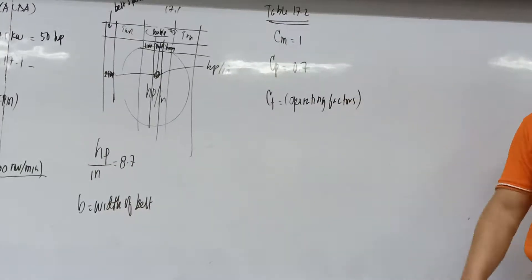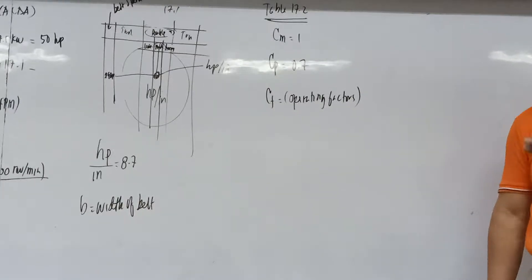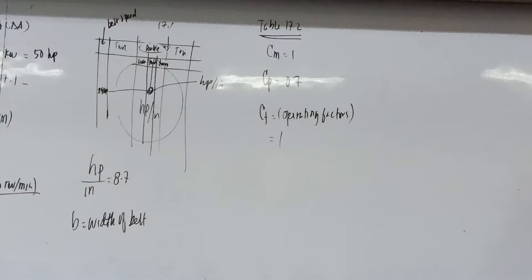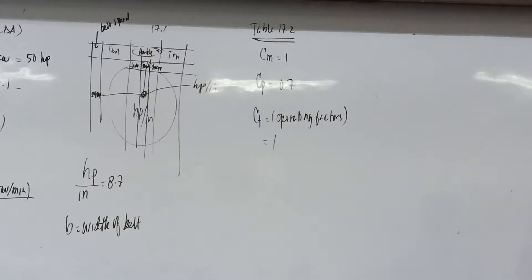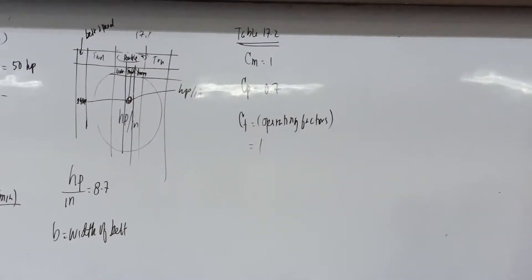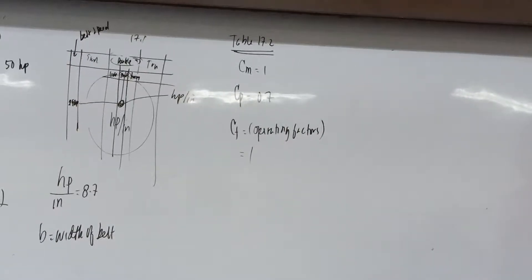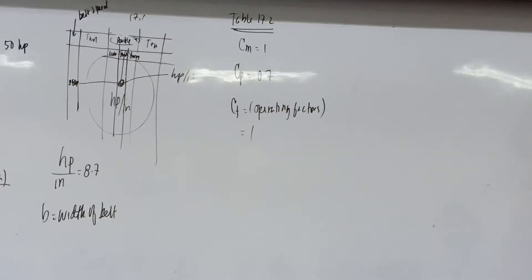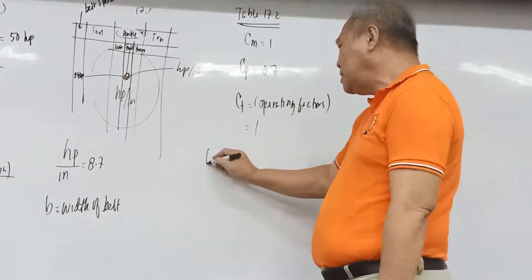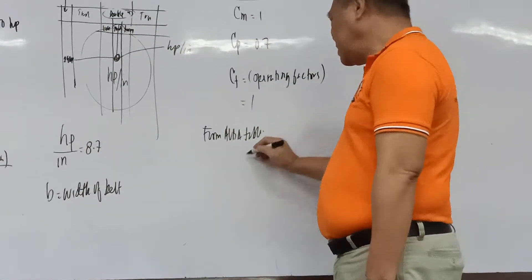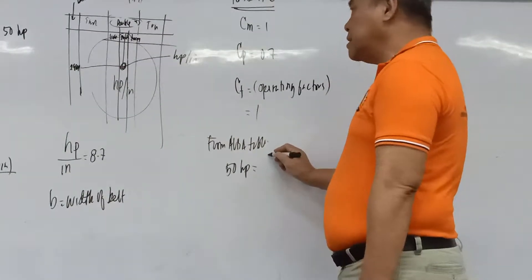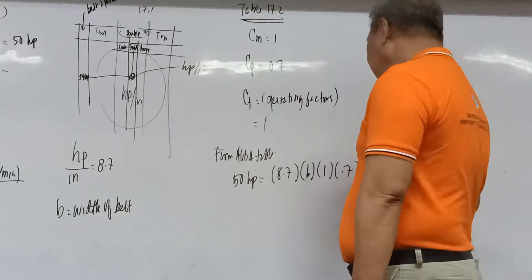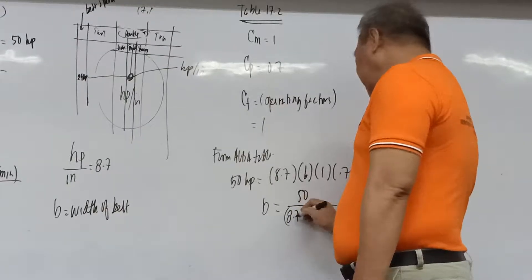We already know the belt width B = 8.2 inches, and F1 - F2. The net tension is: F1 - F2 = 33,000 × HP / V (in ft/min). Substituting: 33,000 × 50 / 2,984 ≈ 553 pounds. So F1 - F2 = 553 pounds.